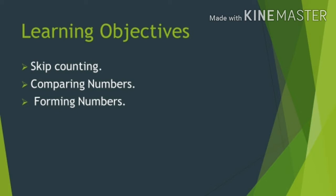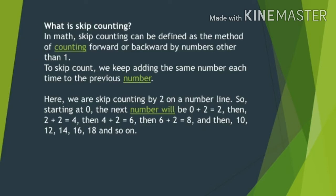Let us understand what is skip counting. Skip counting means the digits are skipped by any number which occur in between while counting the numbers. In maths, skip counting can be defined as the method of counting forward or backward by numbers other than one. To skip count, we keep adding the same number each time to the previous number.